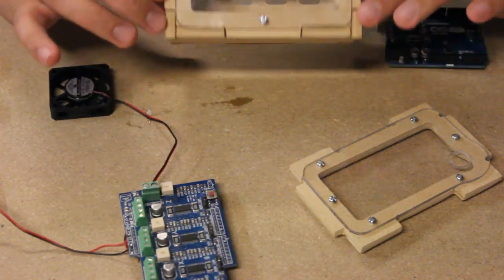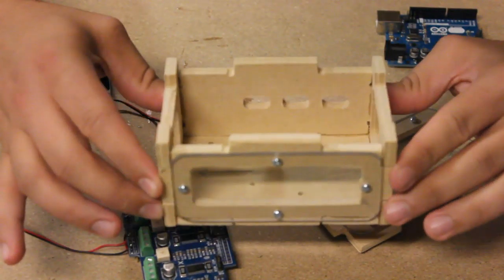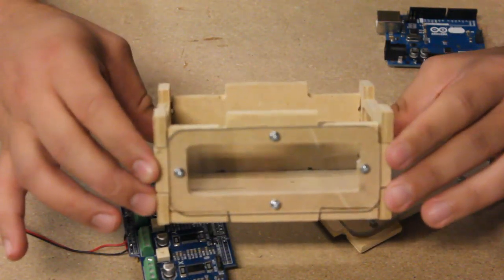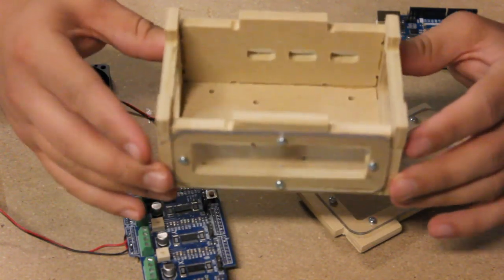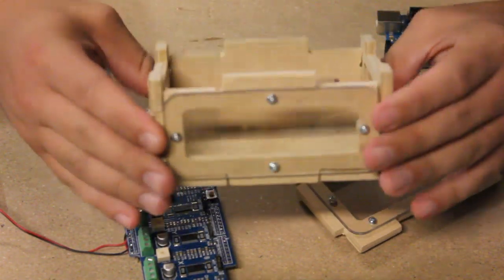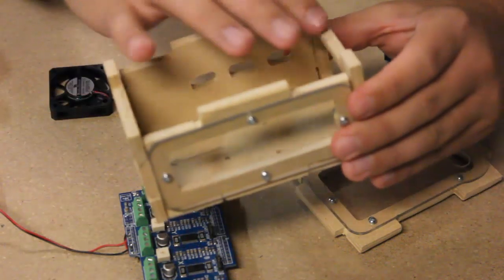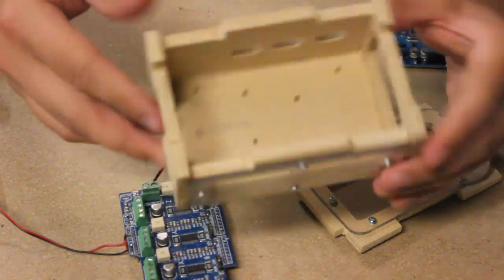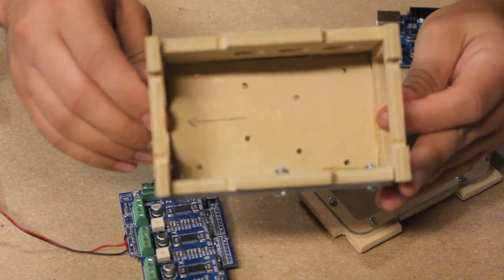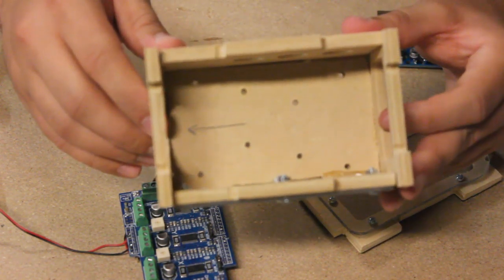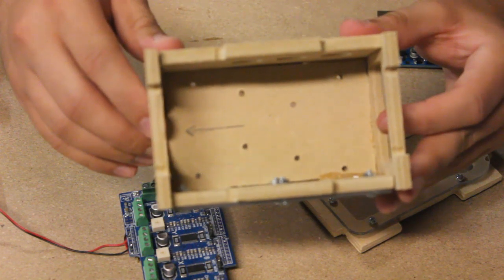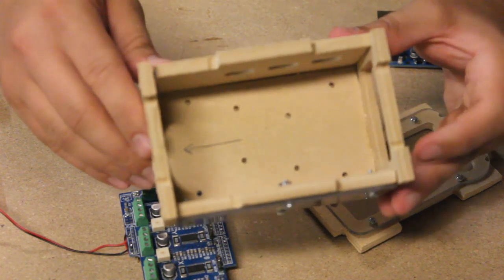The enclosure is all glued up and nice and cured. I did, even though I had marked everything, mount these two sides on the wrong side so I had to redrill my holes to mount the Arduino to. No big deal, just kind of a goof on my part there. So let's get to installing this stuff.